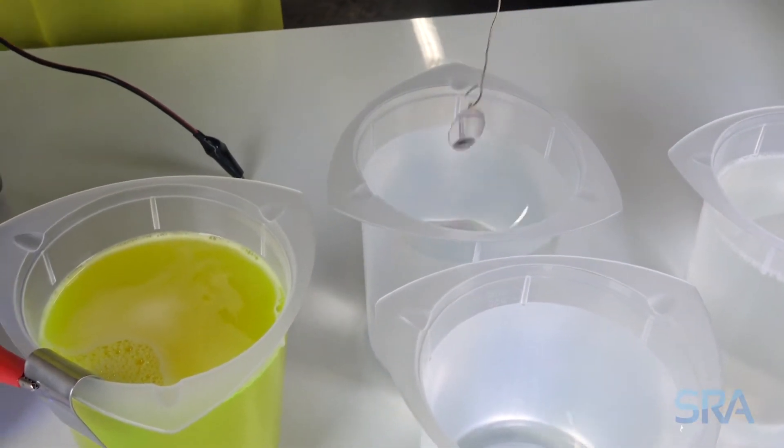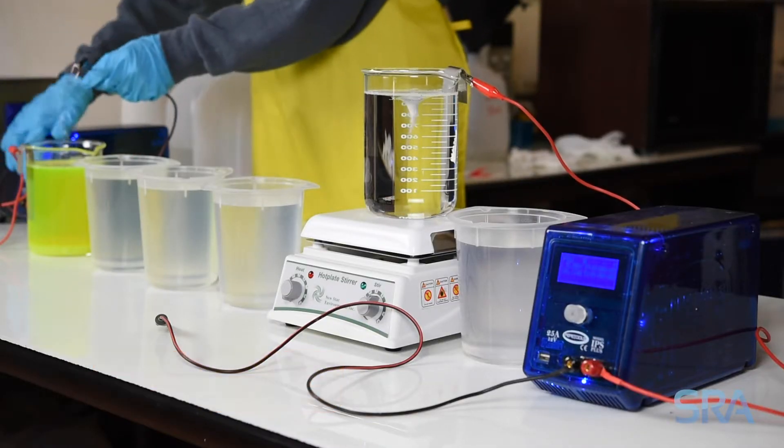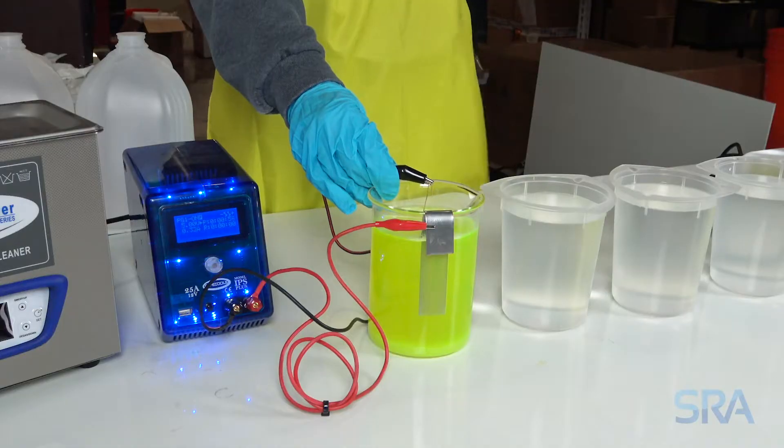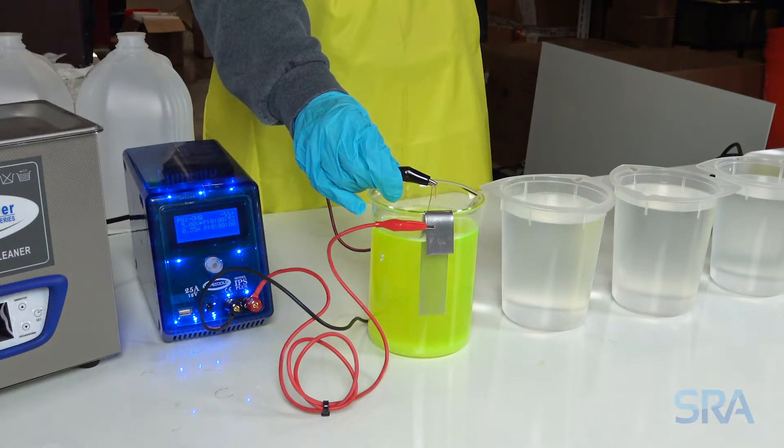Use a piece of copper wire to hold your item and connect the negative lead of the rectifier. Electro clean for 1 minute at 125 degrees Fahrenheit with 5 volts applied to the stainless steel anode.